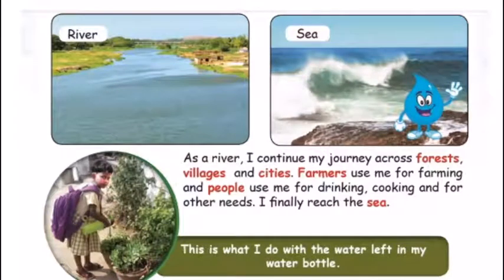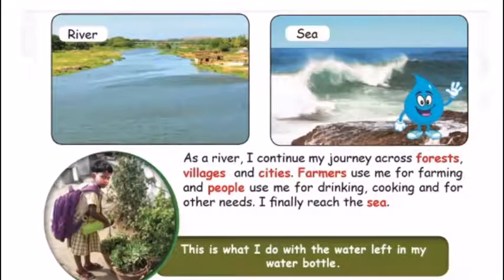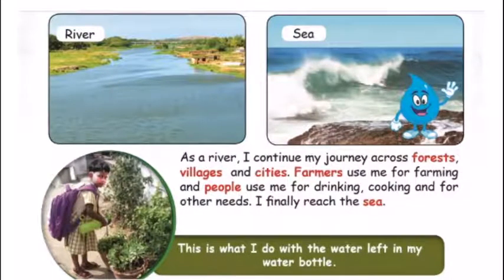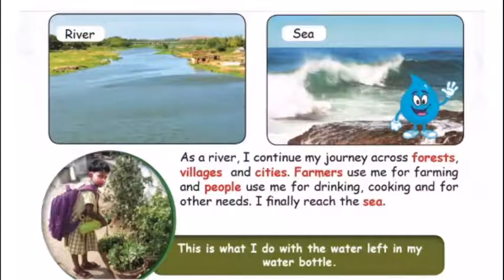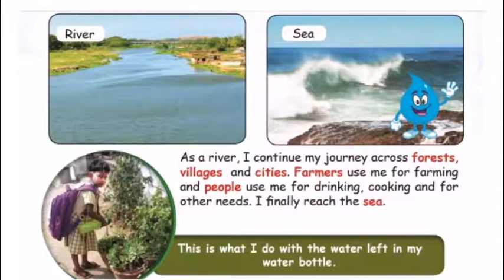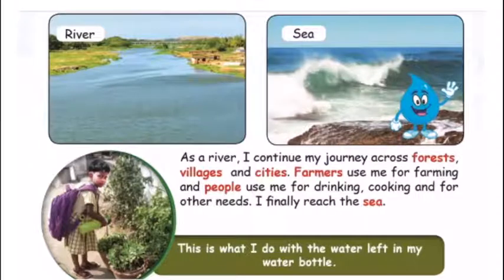If you look at the river, there are green areas, weeds, and farming. There are dams. As a river, I continue my journey across forests, villages and cities. Farmers use me for farming and people use me for drinking, cooking and other needs.